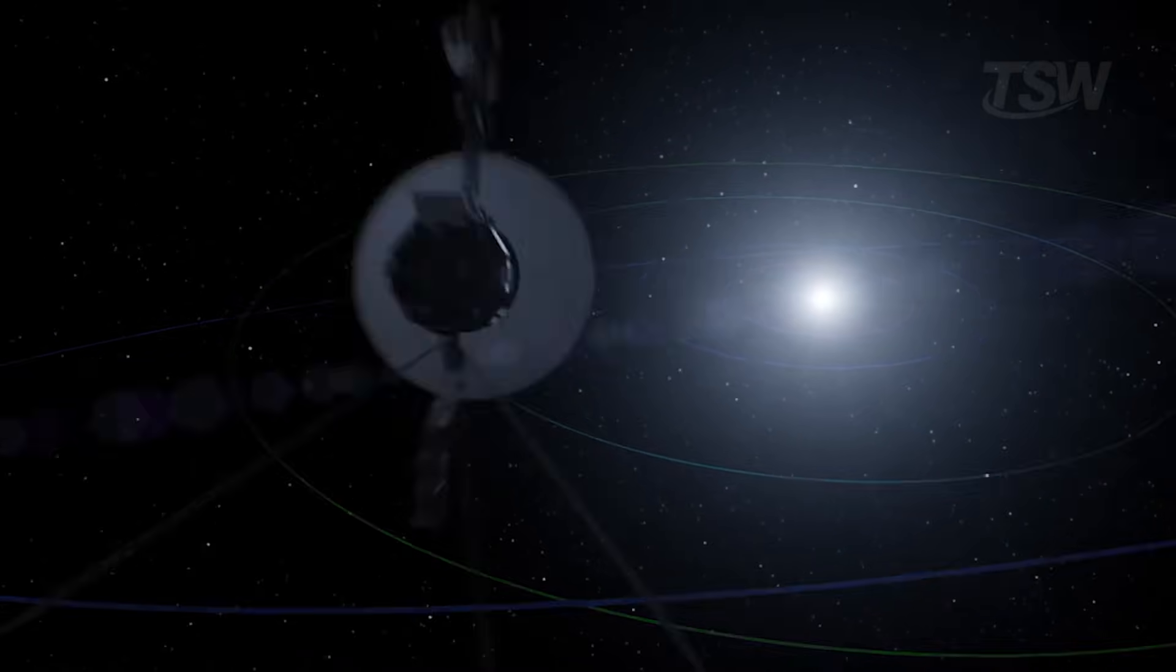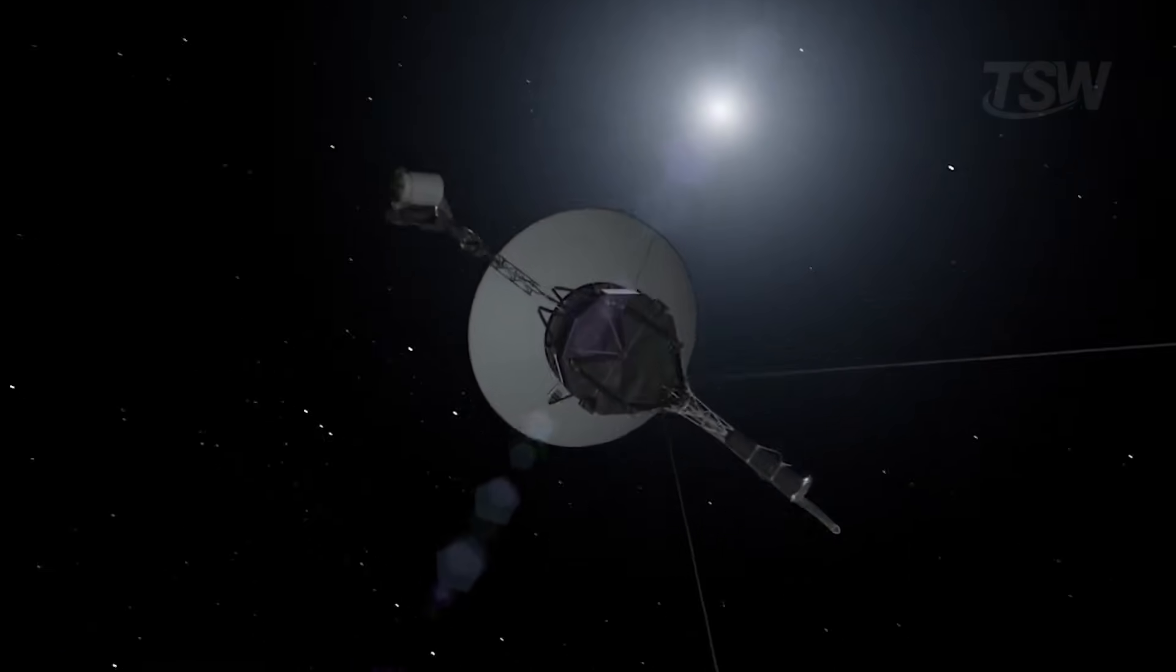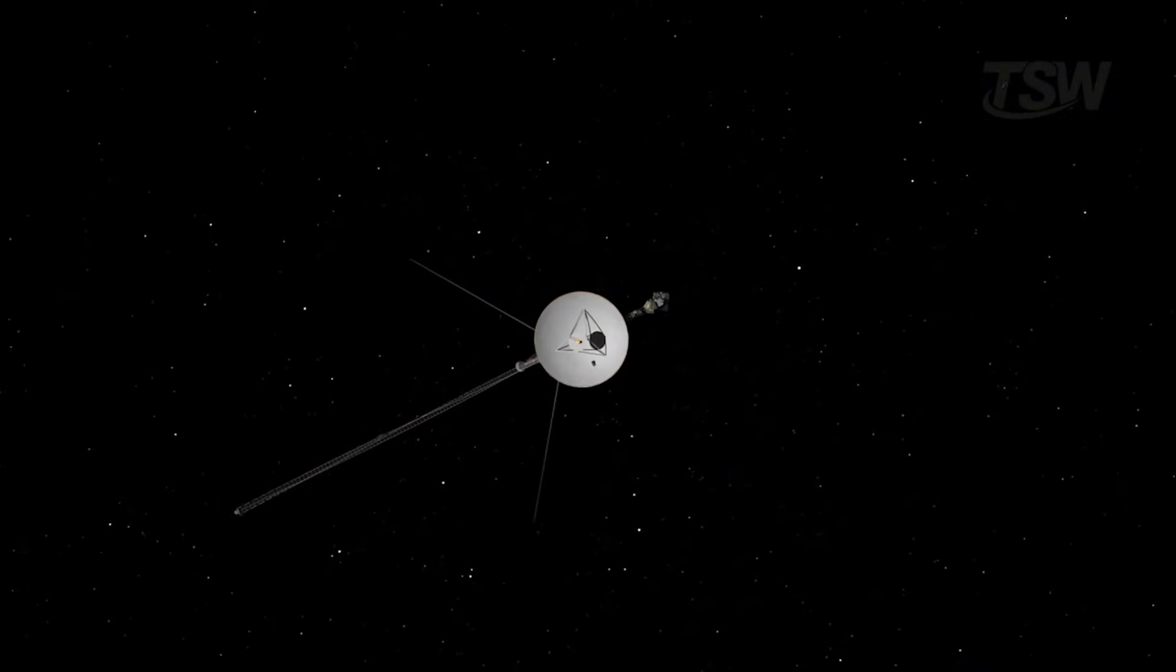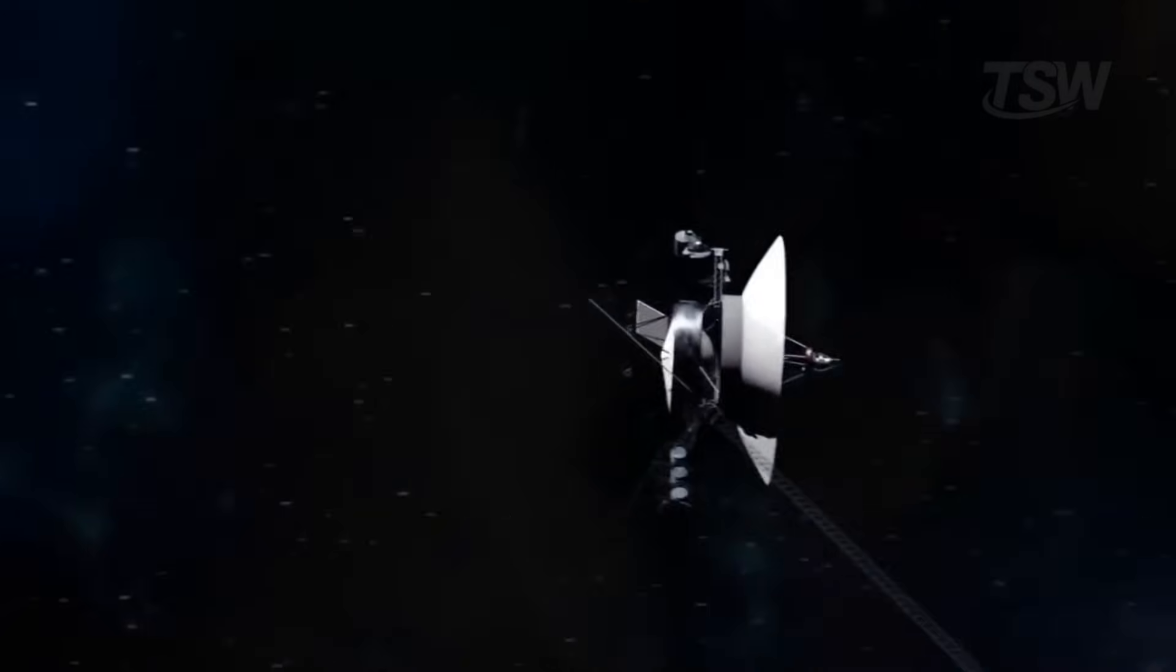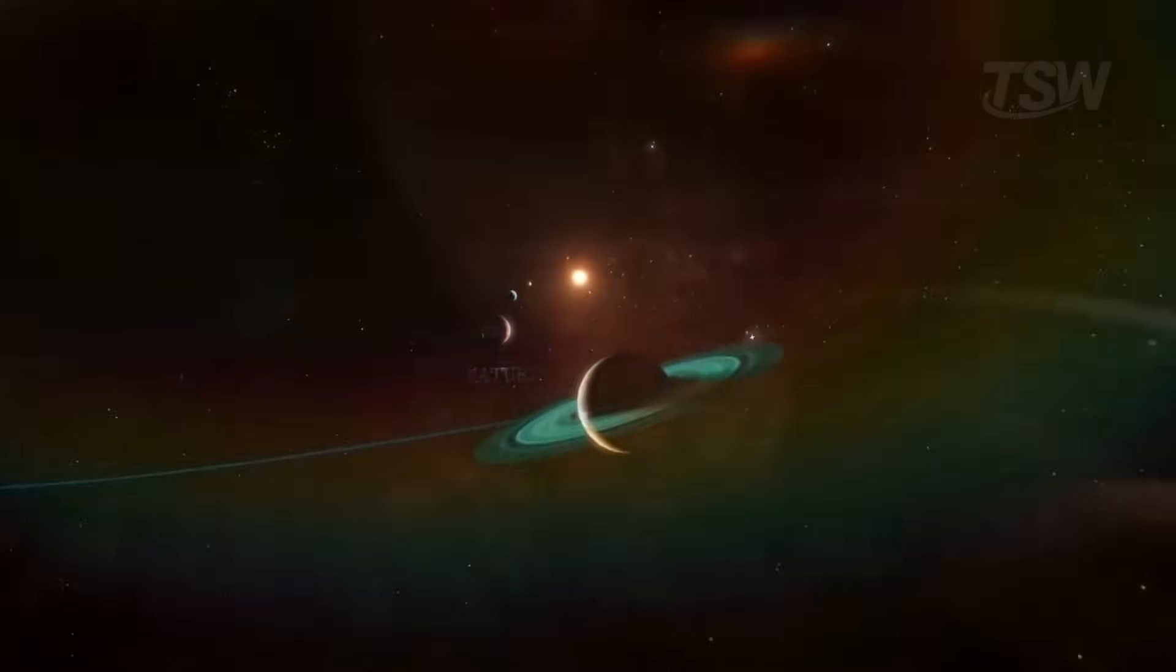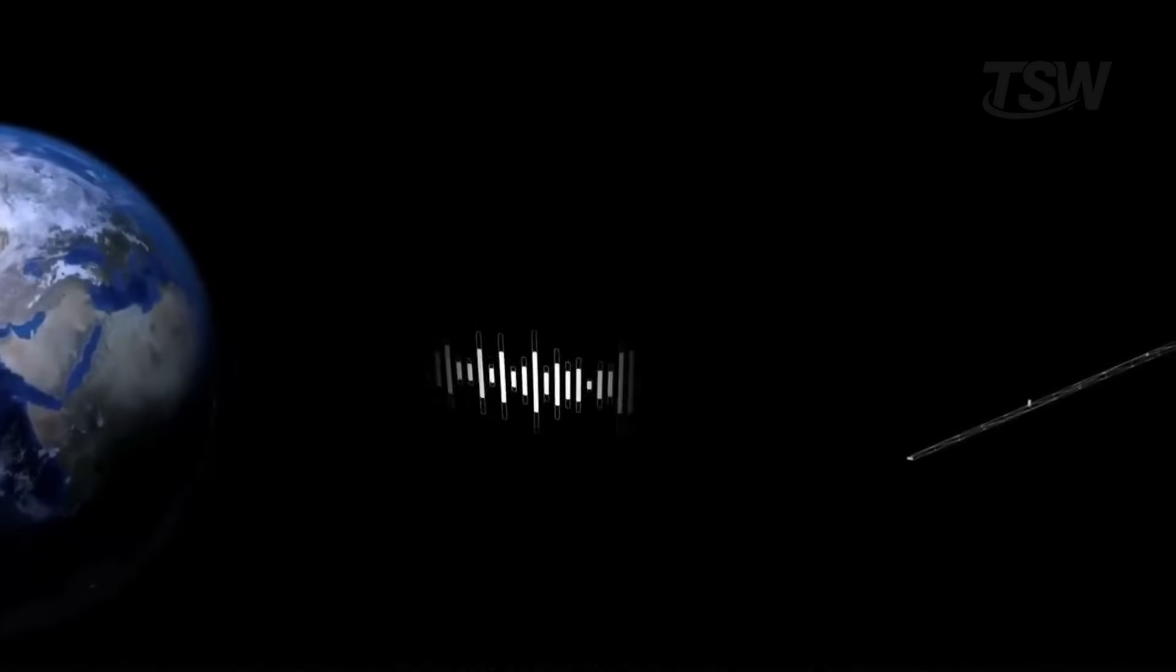When we start talking in days of delay, we stop using everyday solar system units and enter a scale we usually reserve for the space between stars. A light day is small compared to a light year, but it already touches the threshold astronomers use to describe cosmic separations. And seeing one of our spacecraft on that ruler says a lot about how far human curiosity insists on going.